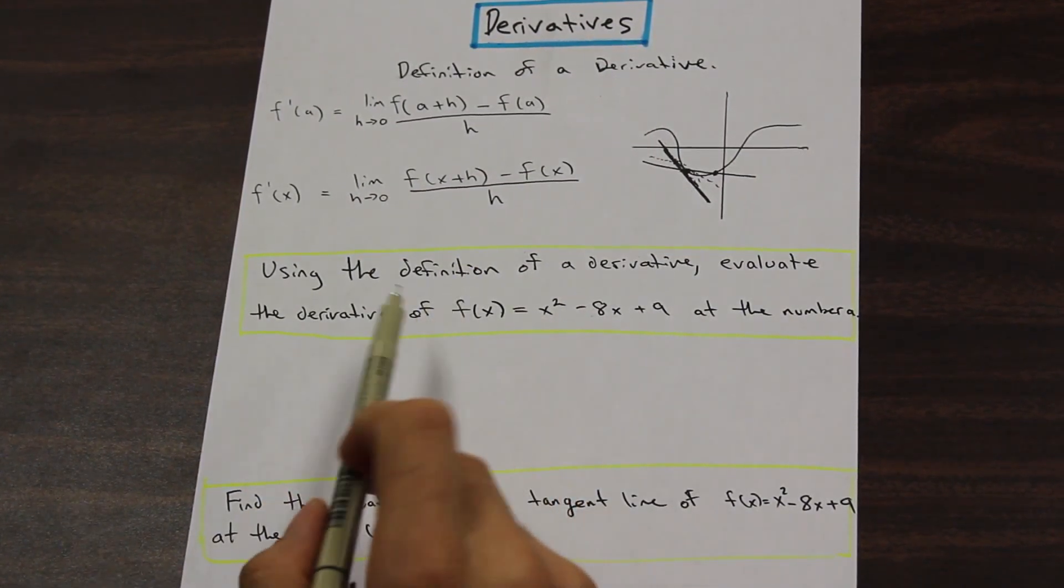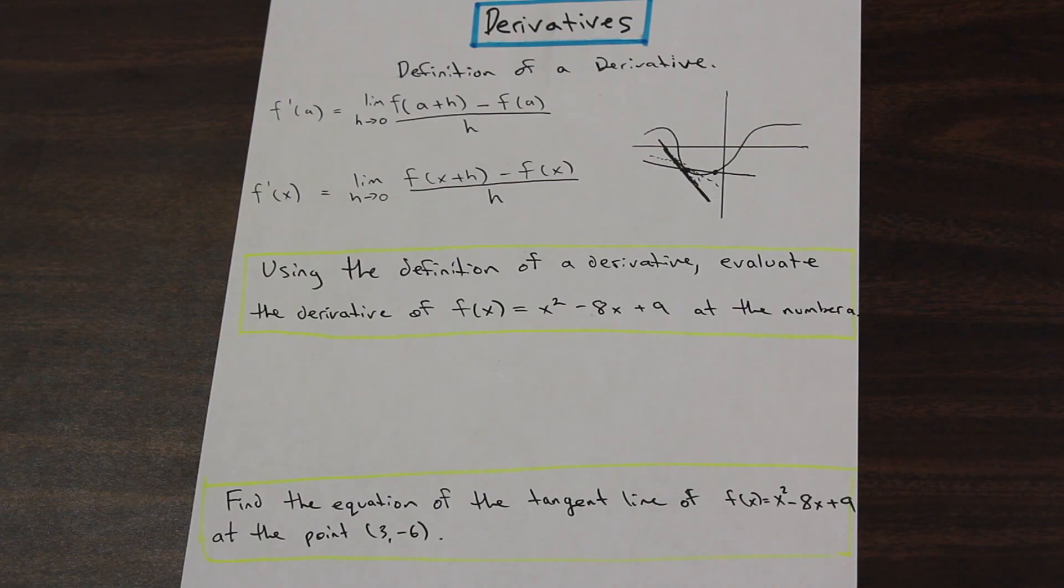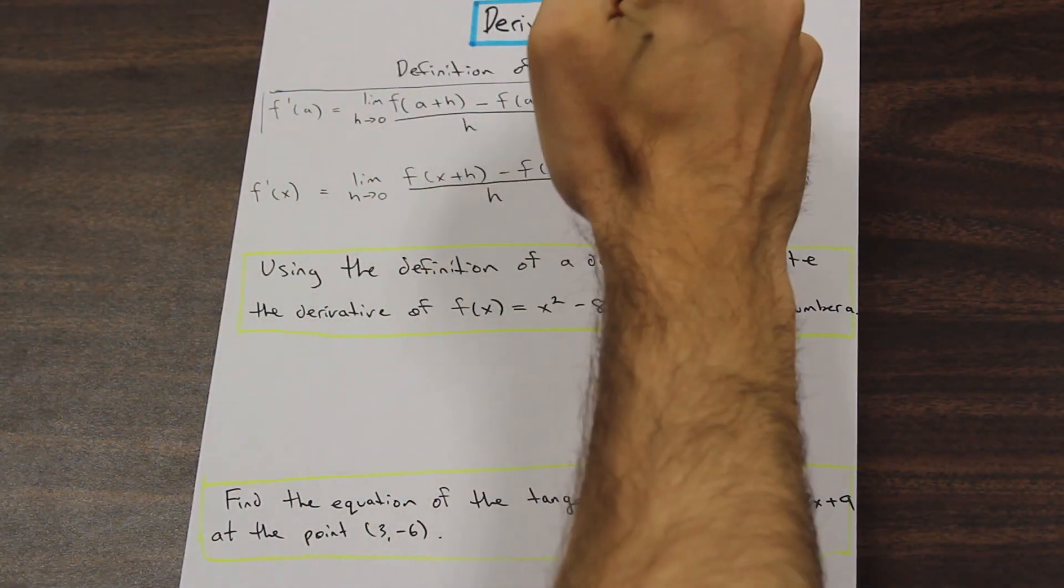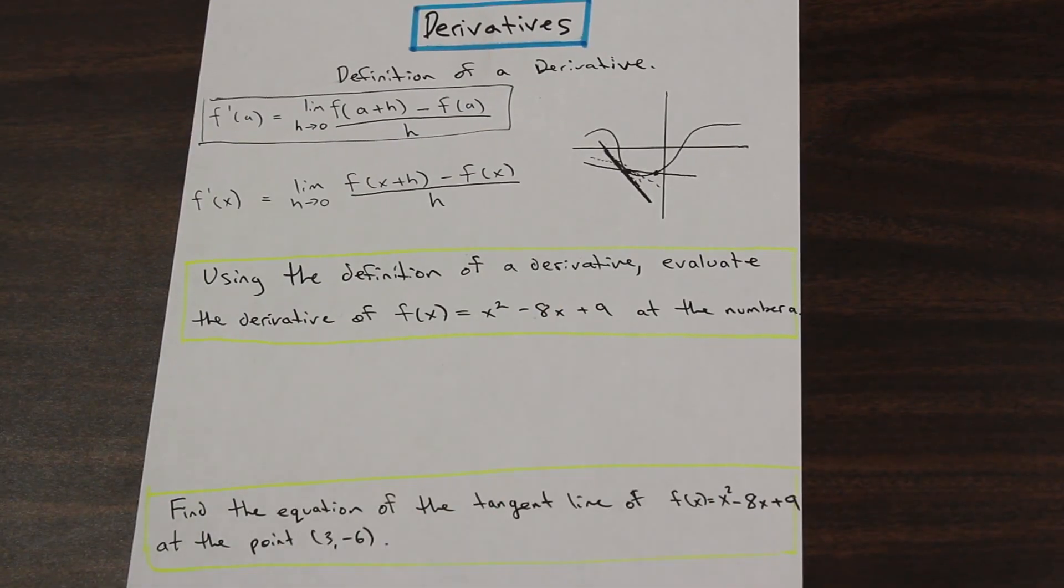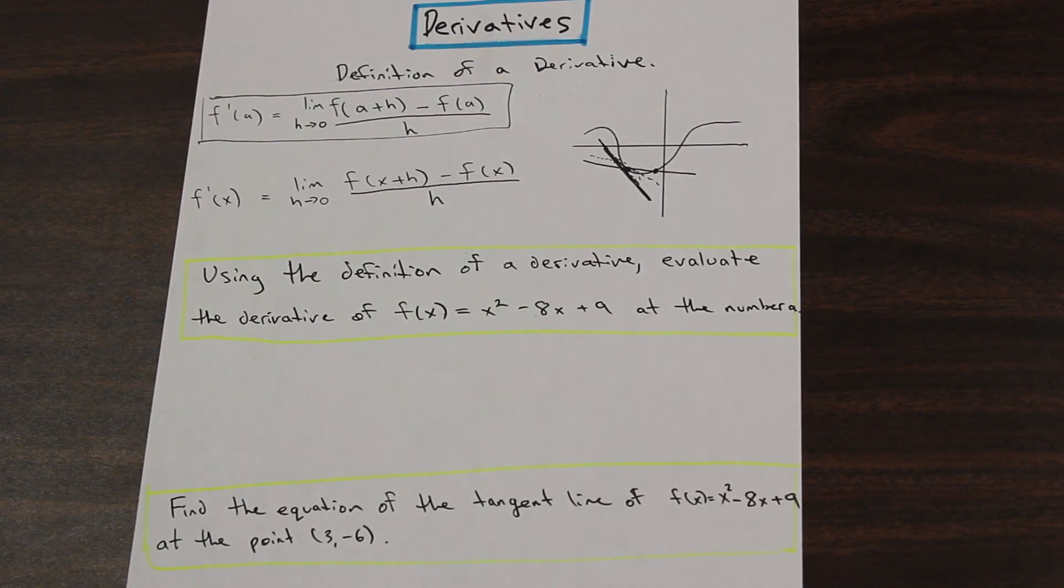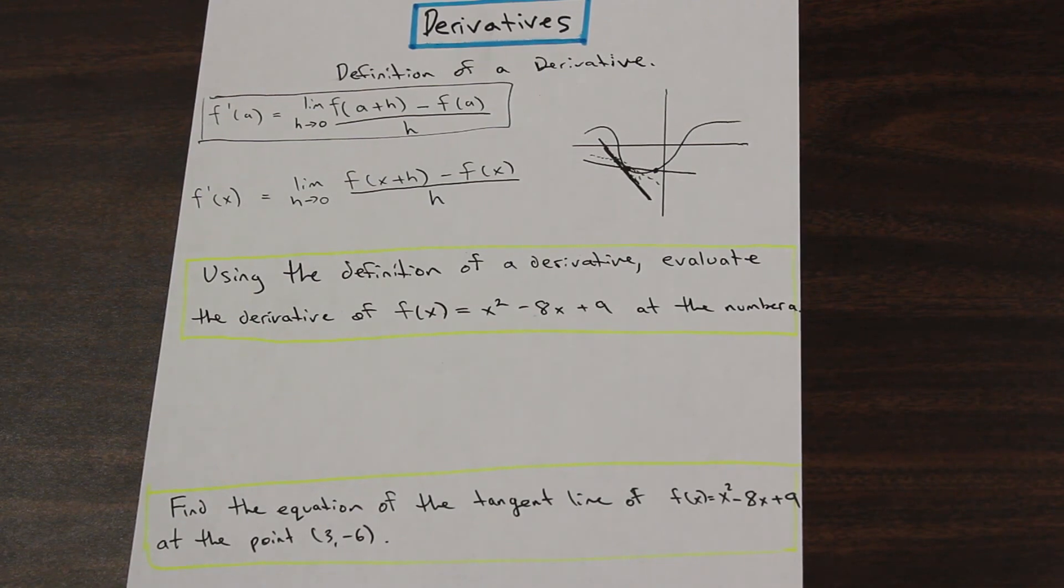So we are asked, using the definition of a derivative, which is this here, we're going to focus on this one up here. Using the definition of a derivative, evaluate the derivative of f(x) = x² - 8x + 9 at the number a. So the number a is just, it could be any number, it could be 5, it could be 20, it could be negative 3. In this question, the number is represented by a. So we're just going to use that number as a constant, that letter as a constant.